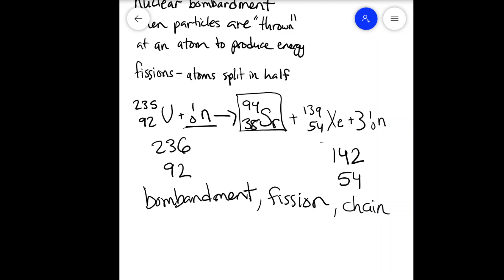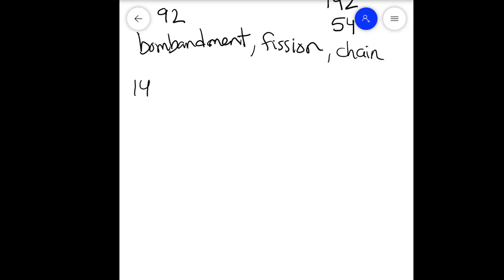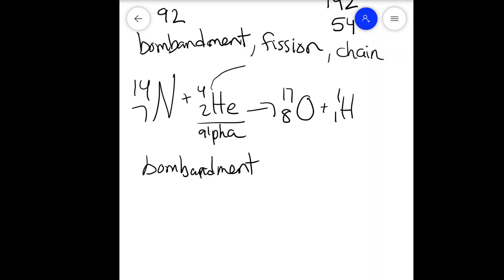So there's another one where you have stable nitrogen, or I believe that's stable. Helium, this is also known as alpha. And then you have oxygen and a hydrogen. So now this is just bombardment. This is just bombardment because it's not alpha decay. Because if it's alpha decay, it would be over here. If it's not over here, it's on the reactant side, not the product side. So it's just bombardment.